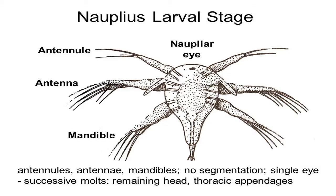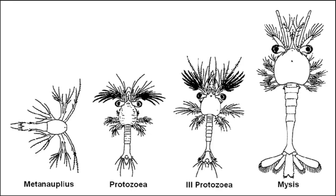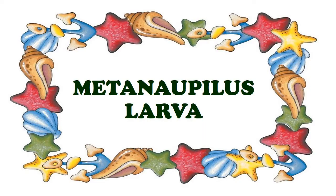In branchiopods, the Nauplius develops straight away into the adult. But in most other crustaceans, it may give rise to other intermediate larval forms like the Metanauplius, Protozoea, Zoea, and Mysis.